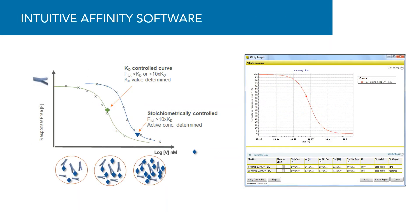Gyrolab affinity software plots the response from free fixed interactant versus molar concentration of the variable interactant to generate the affinity curve. Using a low concentration of F, the fixed interactant, the curve is KD controlled — the left curve — and an accurate KD value is obtained. The data points are fitted with an equilibrium binding model according to a selected interaction model.